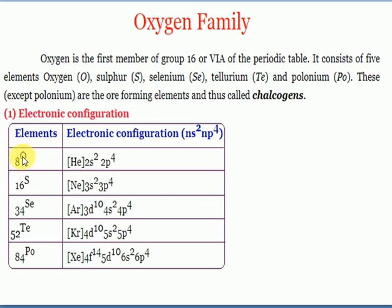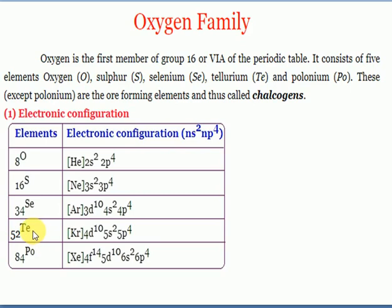Oxygen is available in two forms: O₂ (oxygen) and O₃ (ozone). Sulfur is available as S₈ and is a yellow-colored solid. Oxygen is a gas. Selenium also has atomicity of eight; tellurium atomicity is also eight.